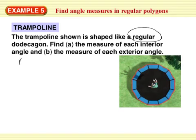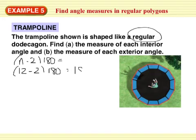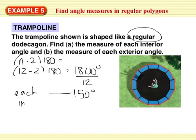So, the measure of the interior angles, we're using this equation and putting in 12. That would be 1,800 degrees, part A. The measure of one angle is going to be, divide that by 12, because they're all equal. So, each angle is 150 degrees. That's each interior angle.